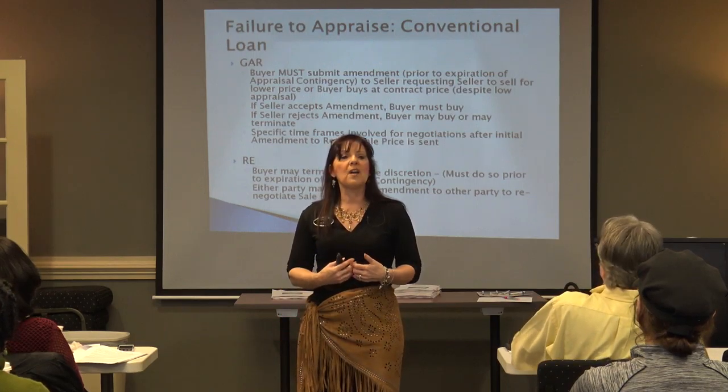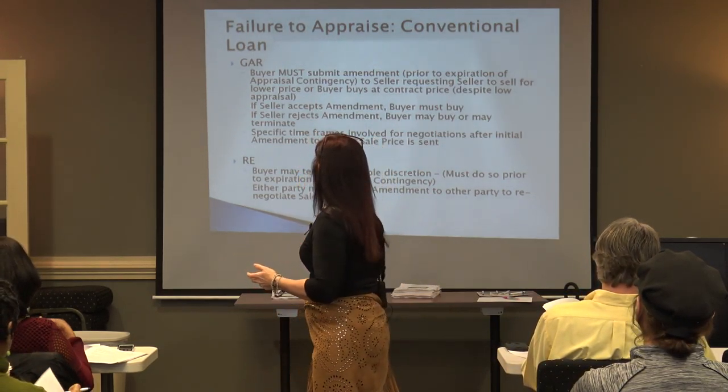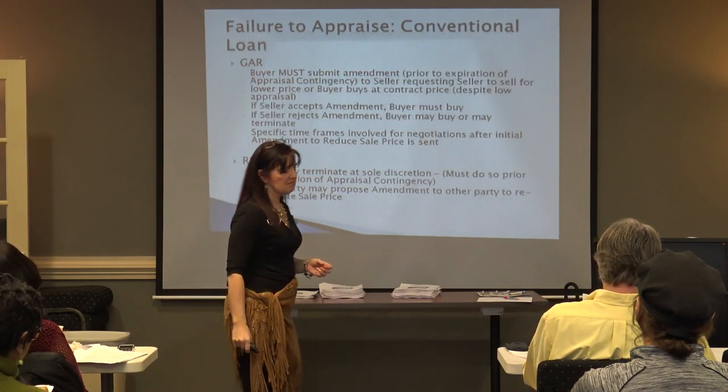Inspection. The only thing the GAR contract says about inspection is that there is a right to inspect the property and a duty to inspect the neighborhood. In the RE forms, it just says duty to inspect — it doesn't specify property or neighborhood. These are all things a buyer should address when making the determination of whether to terminate the contract.